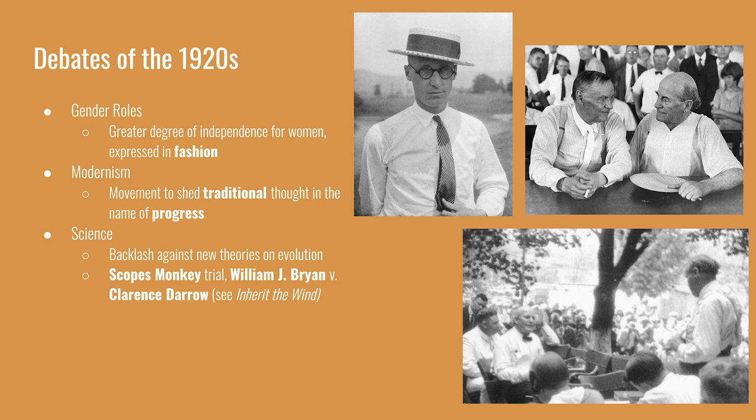In the 1920s, modernism tried to shed traditional thought in the name of progress. It was reflected in new art and architecture and mostly adopted in urban areas. Rural areas tended to have a backlash against modernism, holding more tightly to traditional views. This was also the case in science — the adoption of the theory of evolution was becoming more widespread, but some states like Tennessee forbade it from being taught in public schools.